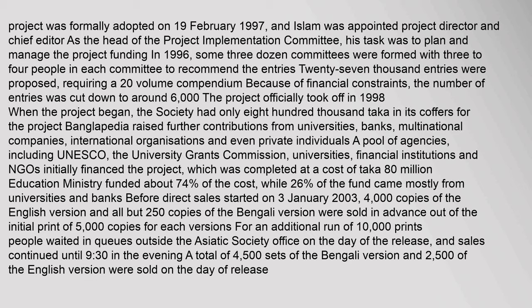Banglopedia raised further contributions from universities, banks, multinational companies, international organizations, and even private individuals. A pool of agencies including UNESCO, the University Grants Commission, universities, financial institutions, and NGOs initially financed the project, which was completed at a cost of 80 million taka. The Education Ministry funded about 74% of the cost, while 26% came mostly from universities and banks.